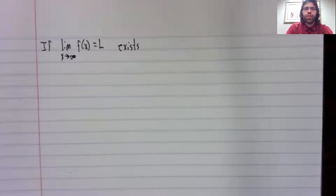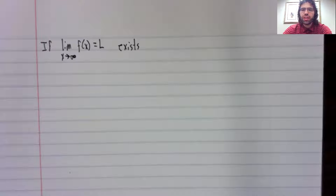Limits at infinity are related closely to horizontal asymptotes, just like infinite limits are related to vertical asymptotes. If a limit exists as X approaches infinity,